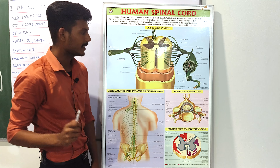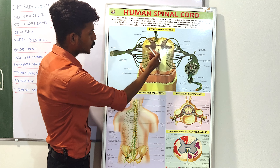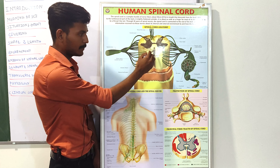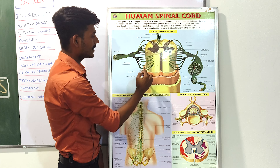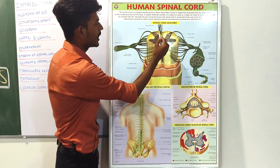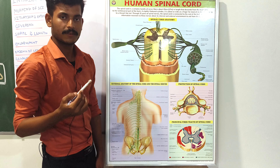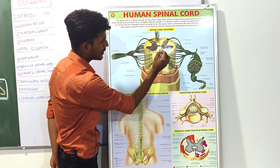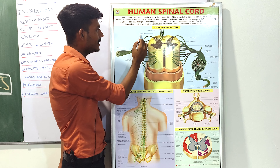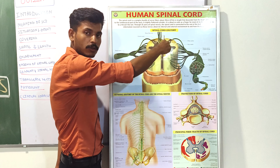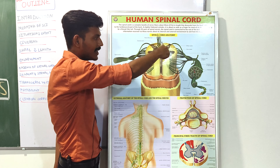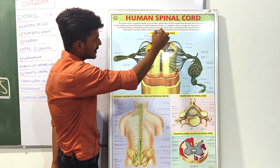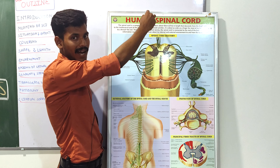In the transverse section, one part is the gray matter and another is the white matter. There is a depression called the anterior fissure and a posterior fissure behind it. The space between the gray matter is called the central canal, and cerebrospinal fluid circulates through this spinal canal. The nerve fibers come from the brain and from higher regions of the central nervous system.